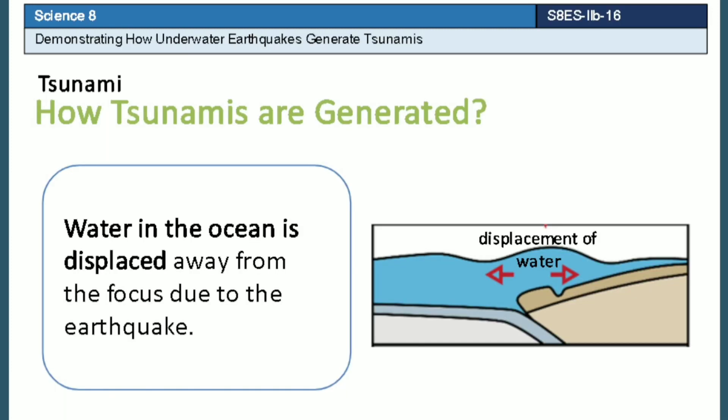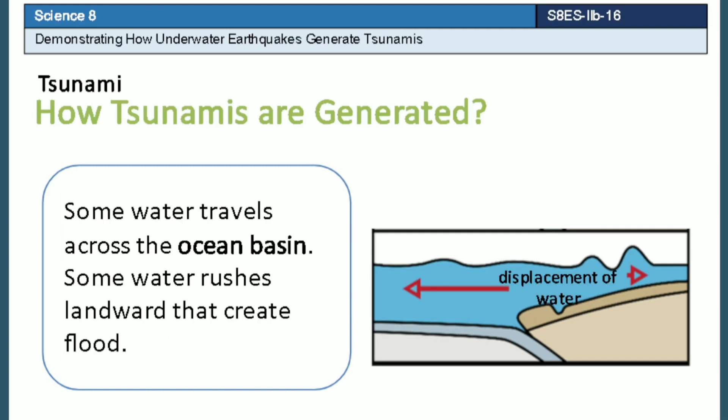When an earthquake occurs, water in the ocean is displaced away from the focus of the earthquake. The displacement of water also disturbs the water on the surface. Some water travels across the ocean basin, while some water rushes landward, which creates a flood.